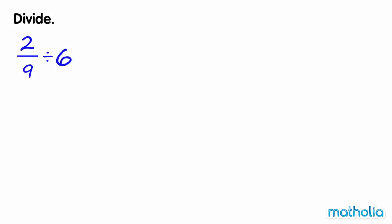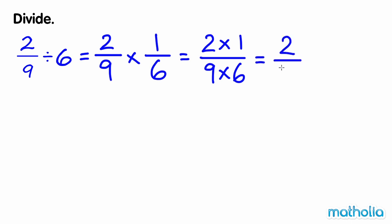Divide. 2 ninths divide 6 equals 2 ninths times 1 sixth, which equals 2 fifty-fourths. Dividing the numerator and the denominator by 2 gives us 1 twenty-seventh. So 2 ninths divide 6 is equal to 1 twenty-seventh.